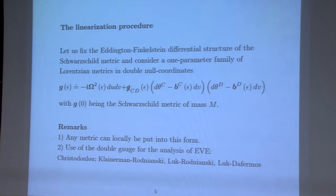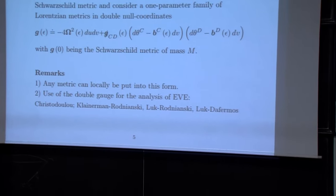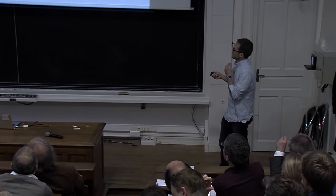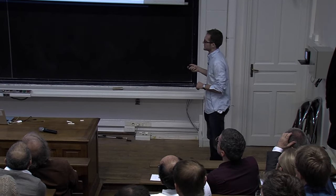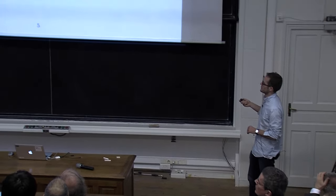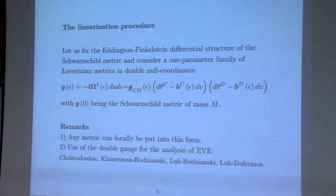Any metric can locally be put into this form. You may ask why we choose this particular form. This double-null gauge has been used with great success in the analysis of the nonlinear Einstein vacuum equation. Many breakthroughs in the last five to seven years have been obtained using this gauge, starting with the work of Christodoulou on the formation of trapped surfaces, the work of Klainerman and Rodnianski, the theory of impulsive gravitational waves of Luk-Rodnianski, and on Tuesday we heard another success of this gauge in the talks of both Mihalis and Jonathan.